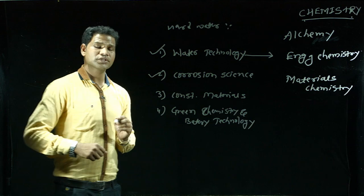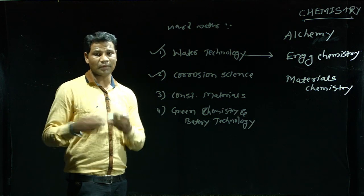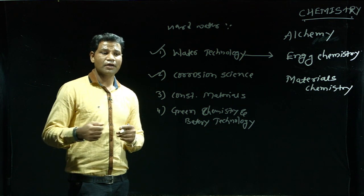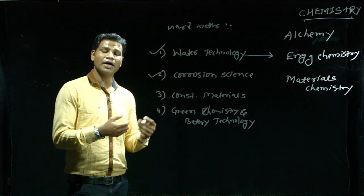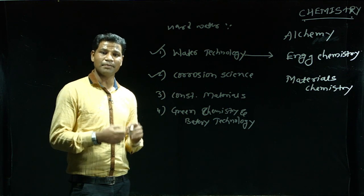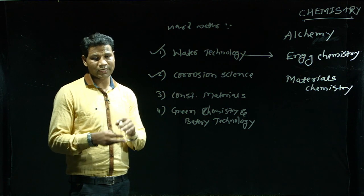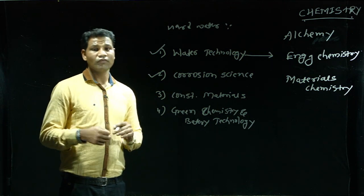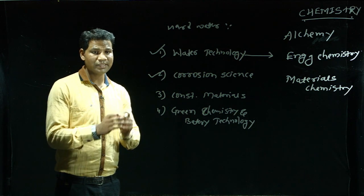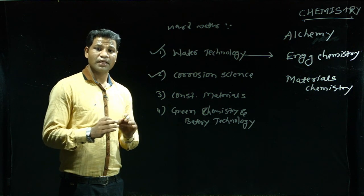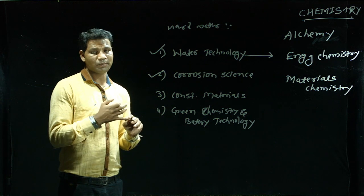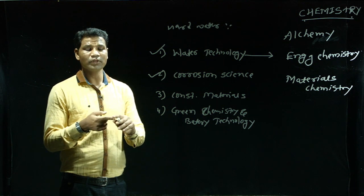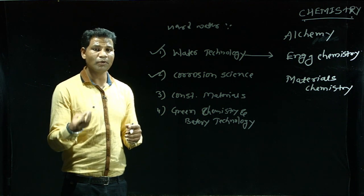The second unit is Corrosion Science for 10 marks. Corrosion is the destruction, decay, or unwanted destruction of any material by chemical or electrochemical attack with its surroundings. Almost all metals present in the earth's crust exist in their combined state — in the form of oxides, sulphates, chlorides, carbonates, silicates, etc. — meaning in the form of ores.